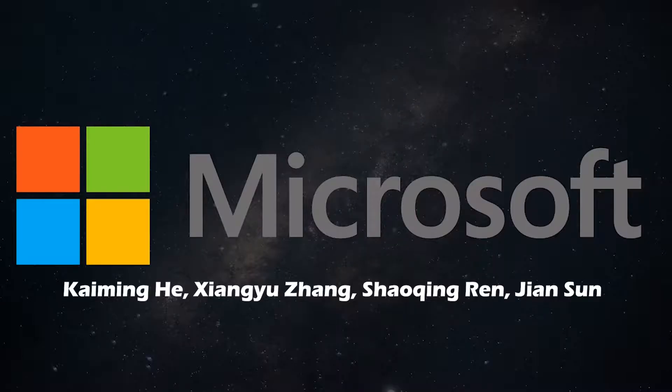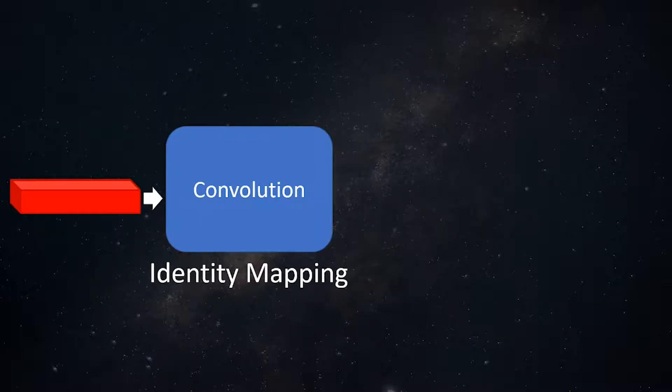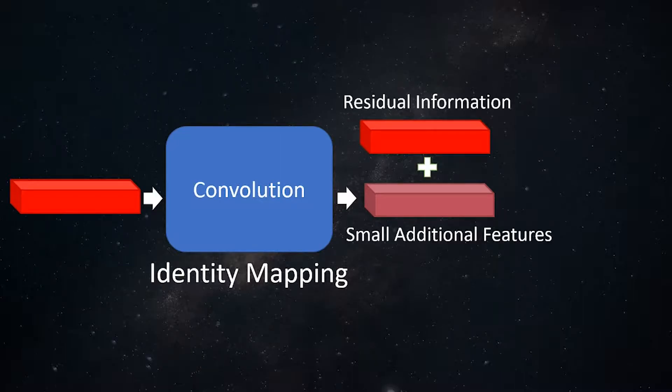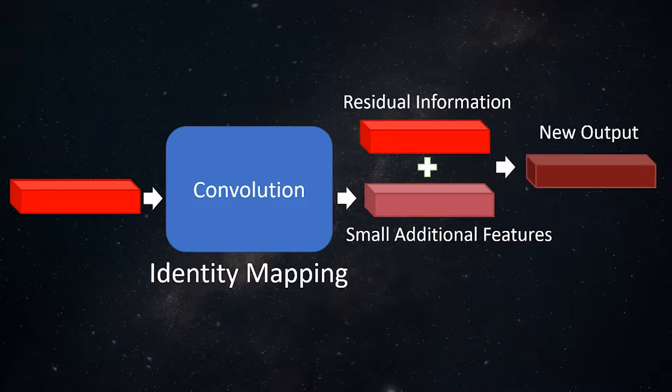Here's what the people at Microsoft decided to do about the degradation problem. Instead of trying to learn the identity function, let's just pass the information forward with a skip connection. To allow for learning, we'll still apply a convolution to the feature maps, but now we just add its own values, the residual information. The residual info is the identity map, and then you can add any further learned features on top of that.